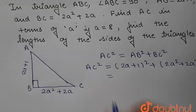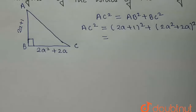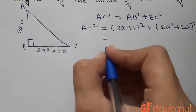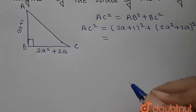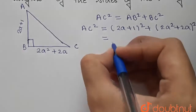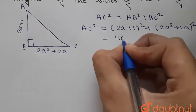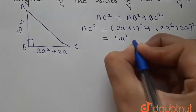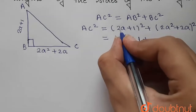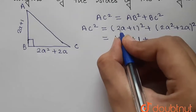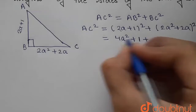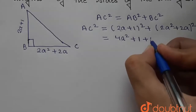So AC squared will be equal to (2a plus 1) whole squared plus (2a squared plus 2a) whole squared. We open this using the identity (A plus B)² = A² + B² + 2AB. So we get 4a squared plus 1 plus 4a from the first bracket.